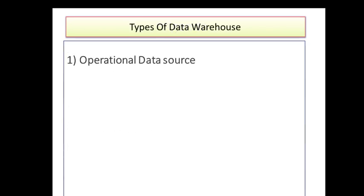Let's discuss the types of data warehouse. The very first type is the Operational Data Store, shortly called ODS — O for Operational, D for Data, S for Store. It mainly contains data coming from the OLTP system, so it holds current data.